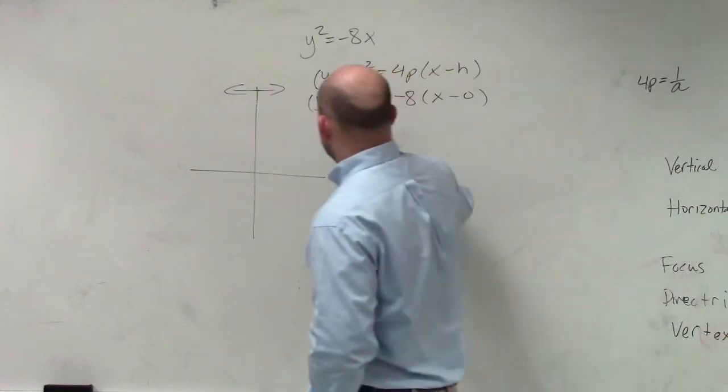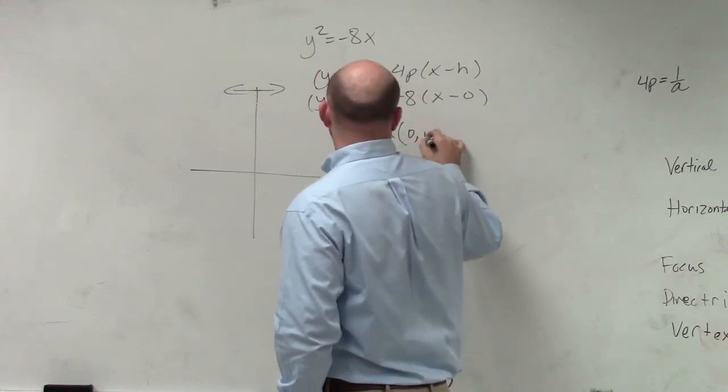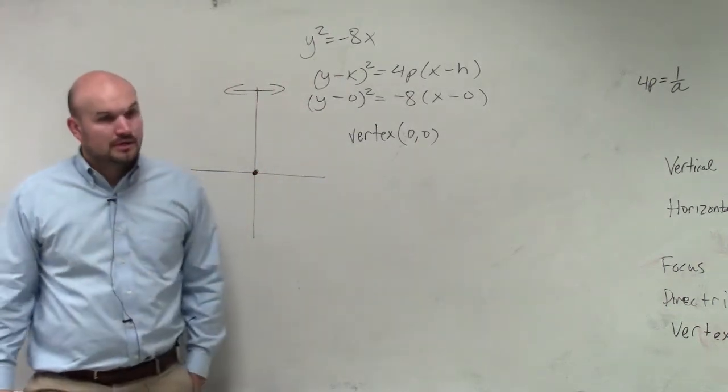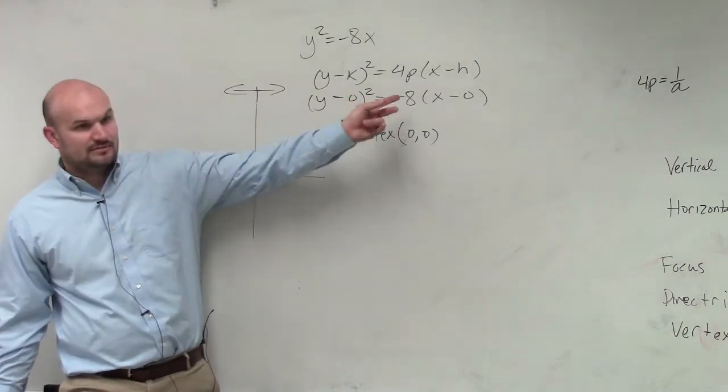So my vertex, which is hk, is 0, 0. Would everybody agree with me? Vertex is 0, 0. hk. Just like we did before.